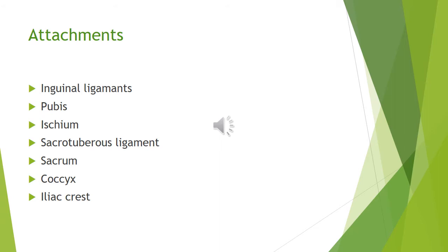The attachment of fascia lata has superior and inferior parts. Here is the slide showing the superior attachments. On the anterior aspect, it is attached to the fascia lata and the inguinal ligament. On the lateral aspect, it is attached to the medial side.